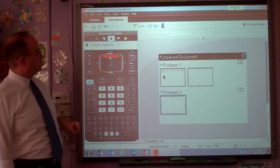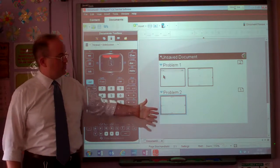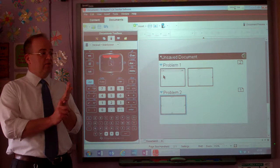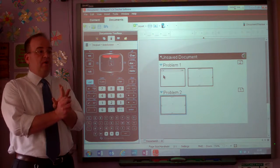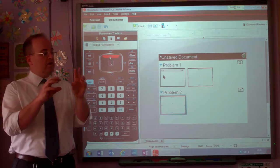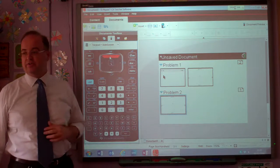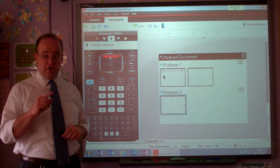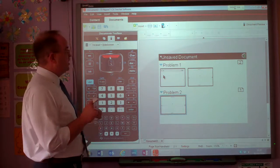We can look at them by going control up. So now we've got problem 1, problem 2. So if you're doing an exam, if you're doing a homework, you can keep the calculations for that problem in a separate section of the calculator. You might think, what's the benefit of that? There is a huge benefit to that.